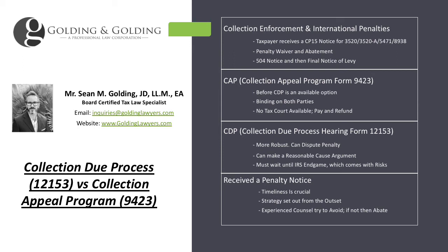In addition, if the taxpayer has really bad facts and they're really just going to rely fully on sympathy, they may also want to do collection due process instead. The collection appeal is binding on both parties, so a lot of times when you're doing this type of research, collection due process will come up a lot more — because it's more robust. With collection due process, you can still go to tax court after the fact, and you can dispute the underlying penalty and make a reasonable cause argument. It's right there in the collection due process instructions, whereas for collection appeal, it's not really used to dispute the penalty itself.